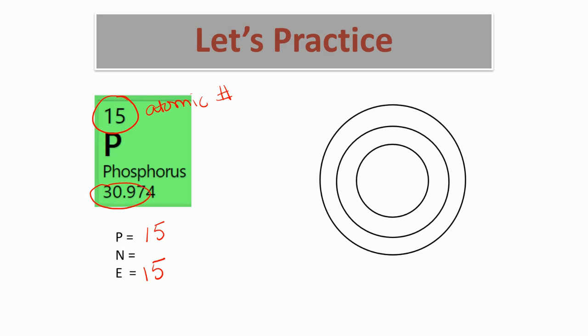So we know that we have 15 protons and we have 15 electrons. If we look at the number down here, this is the atomic mass. And the atomic mass, we can round up to 31. If we know that the mass is 31, we know that if atomic mass is made up of proton and neutron